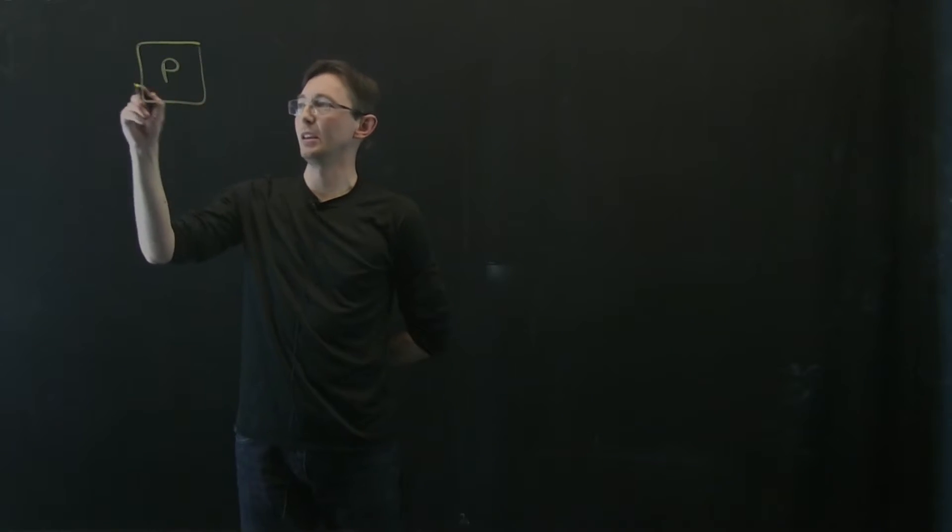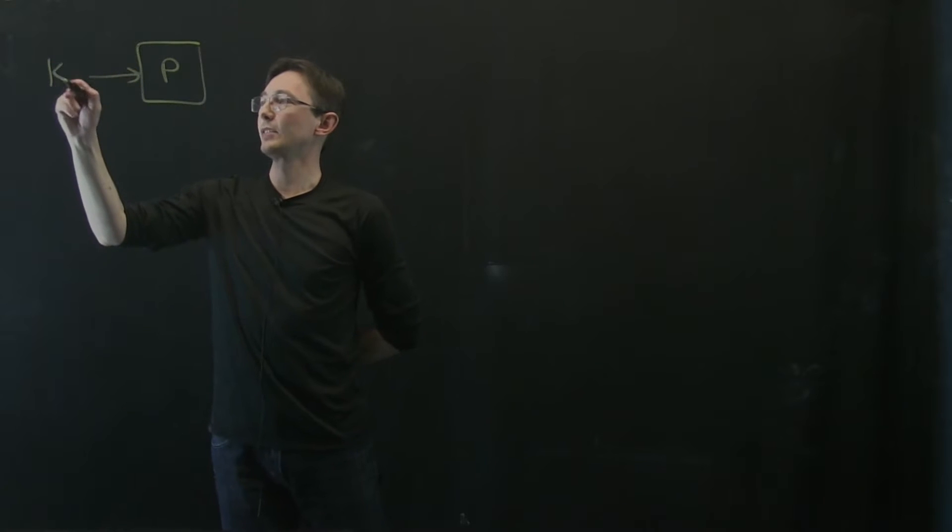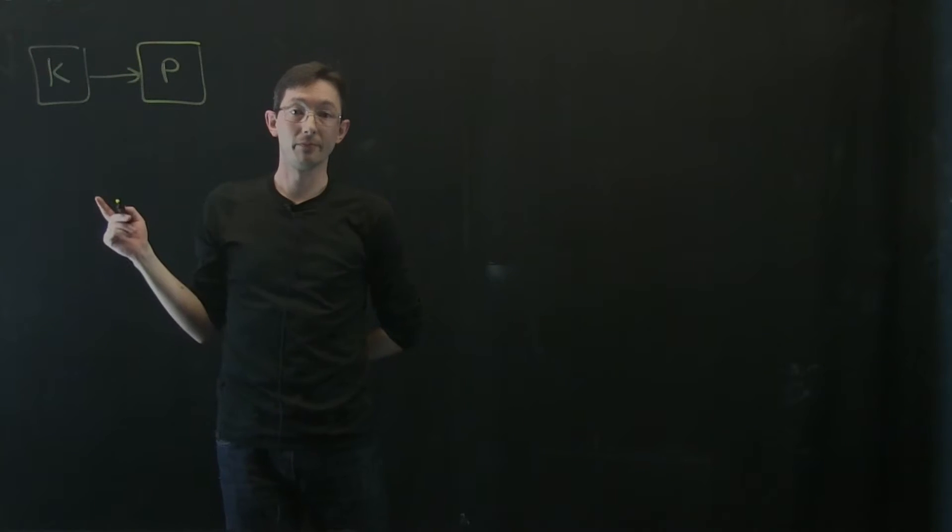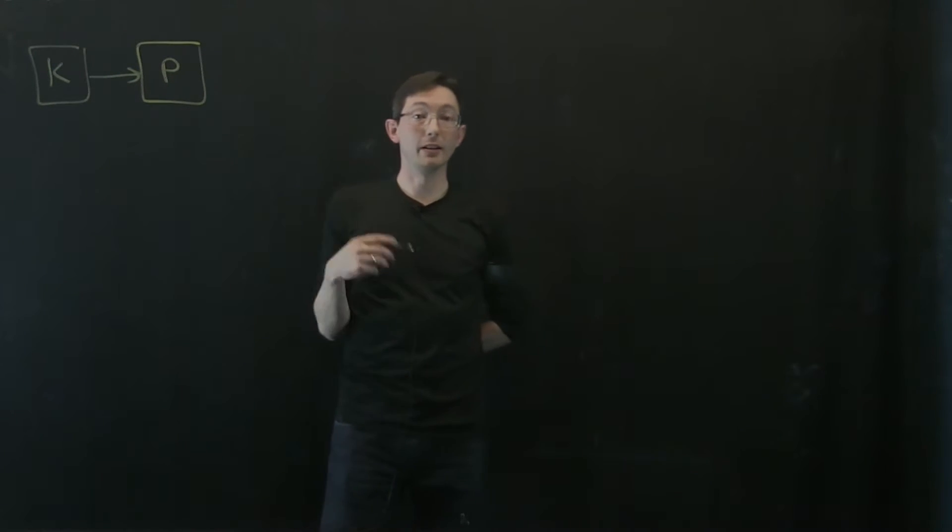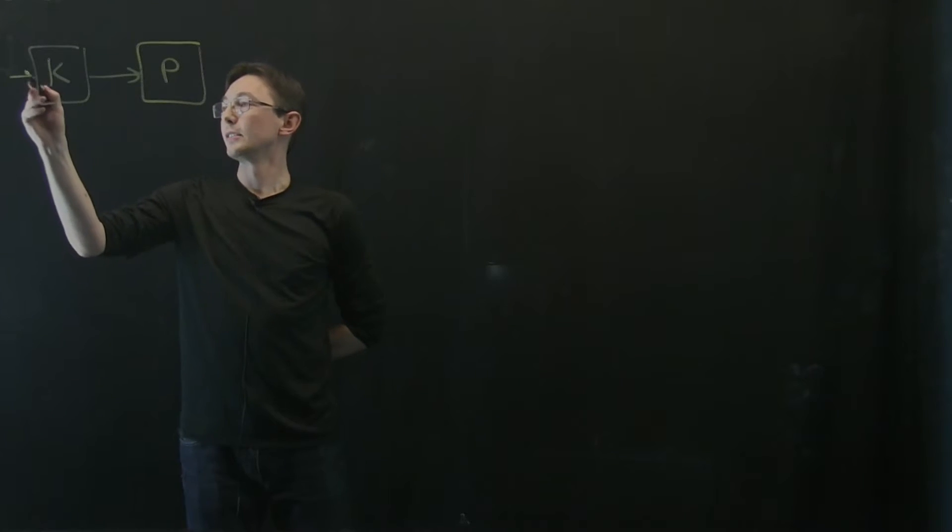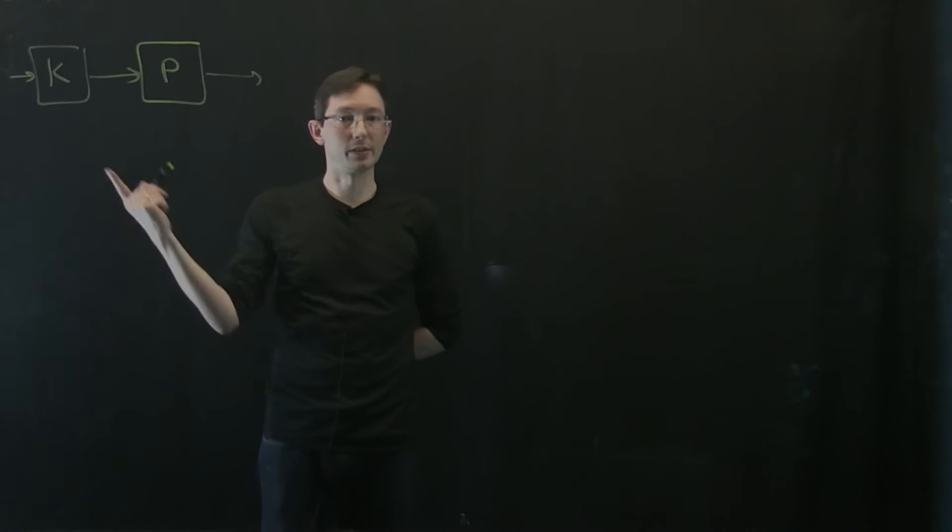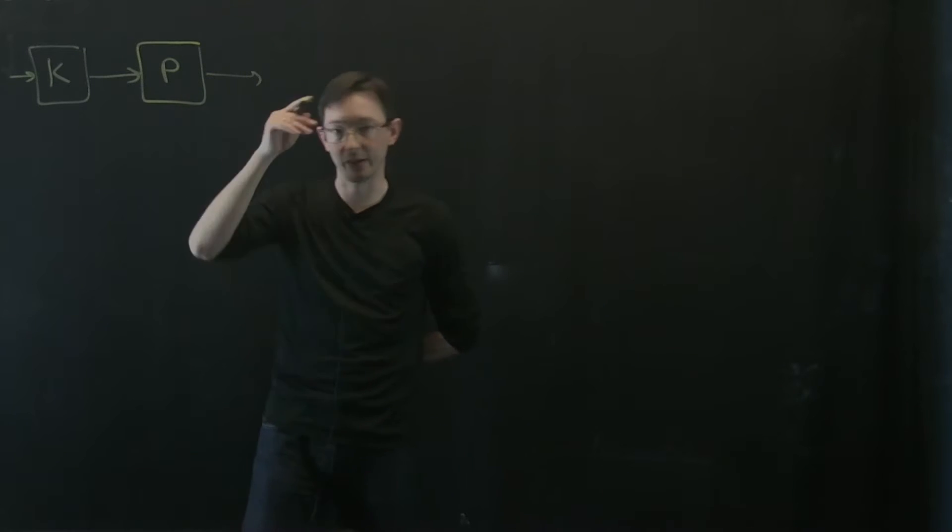So I want to give you some very cautionary tales. Let's say I have some plant P and I have some controller K, and I'm going to try to invert P so that I get a good transfer function, so that the transfer function looks like one.